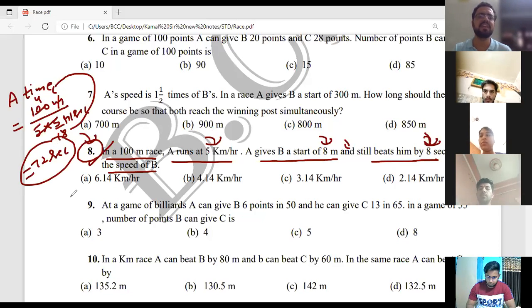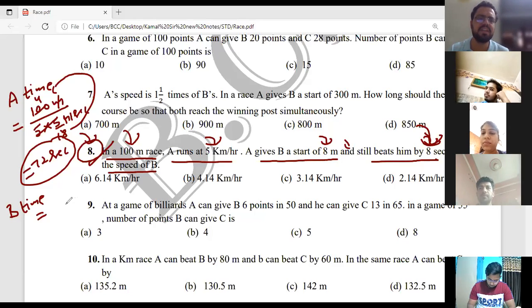So we have this race where A takes 72 seconds to cover 100 meters distance. And A beats B by 8 seconds. So B's time for this race is 72 plus 8, because B is slower, so 8 seconds late. 72 plus 8 equals 80 seconds.